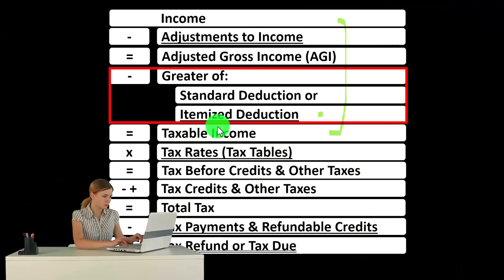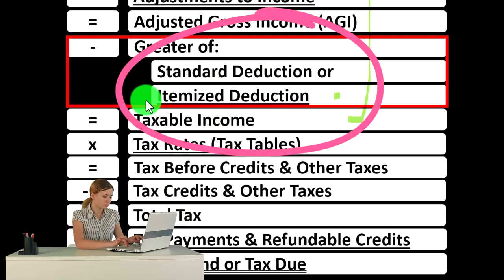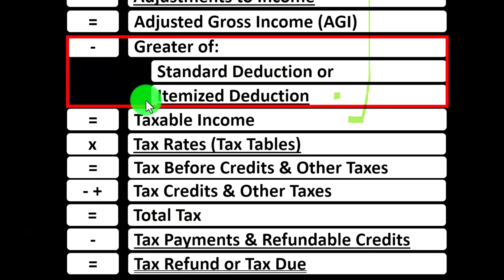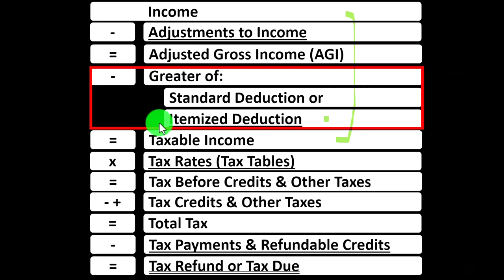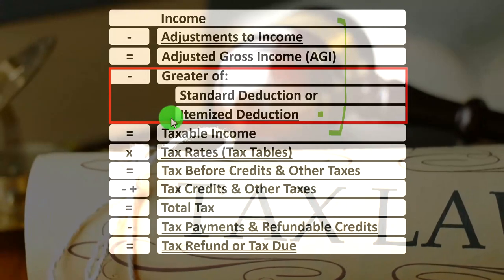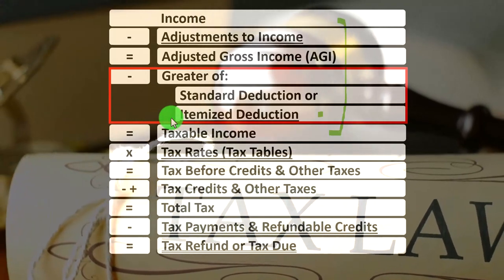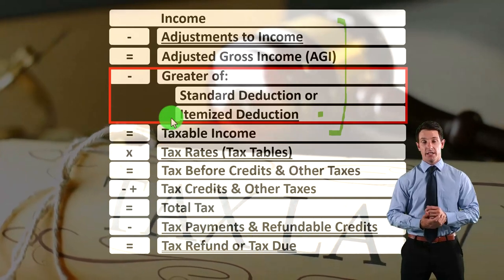Now, the next thing to understand is when would someone be pushed from a standard deduction to an itemized deduction? The normal trigger is related to the home — the home purchase — because the home mortgage interest is quite a significant deduction. Then you've got property taxes and state taxes, which are often deductible for federal income tax purposes. That combination of property taxes and mortgage interest often pushes people over to the point where they're no longer using the standard deduction but are itemizing.